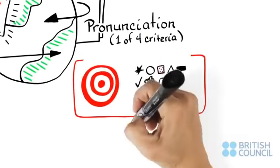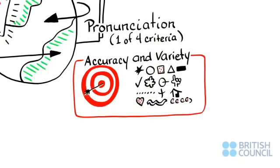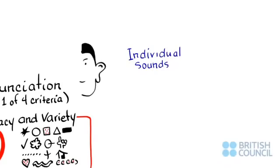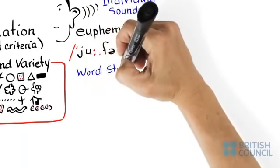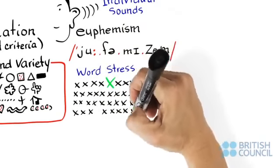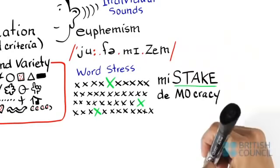This criteria focuses on the accuracy and variety of pronunciation features, which include individual sounds. The spelling of a word can sometimes confuse this. For example, euphemism. Word stress. Stressing the wrong syllable in a word is a frequent error. For instance, it should be mistake, democracy.